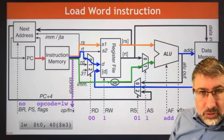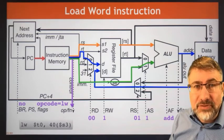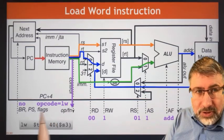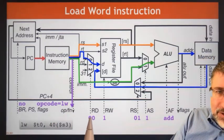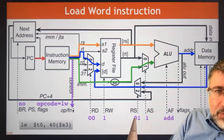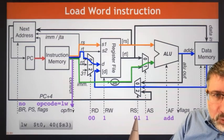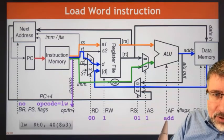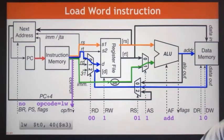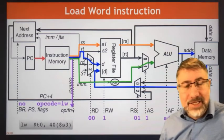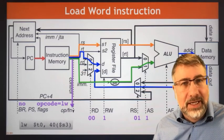Here are the control point values for the load word operation. The opcode is load word. We're not branching or jumping. Destination register is zero; we are writing back to the register file. Register source is one; ALU source is one. We tell the ALU to add. We tell data memory to read and not to write. Those are the control points needed to specify load word.